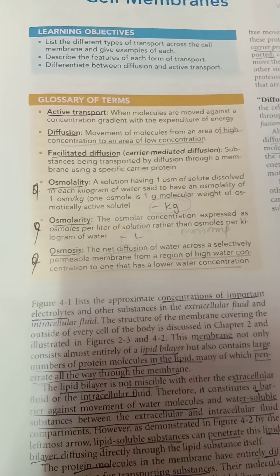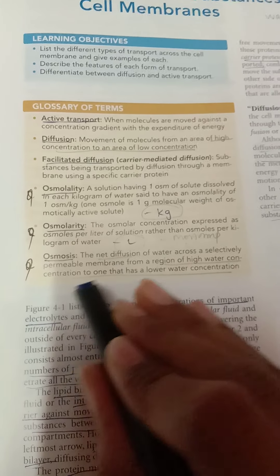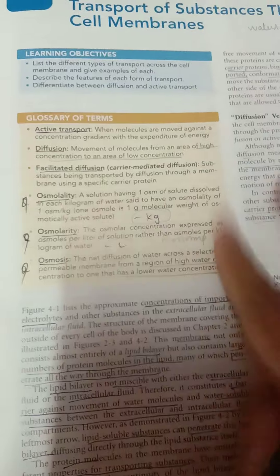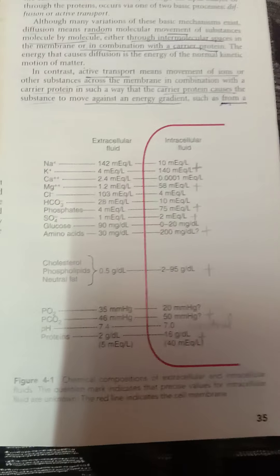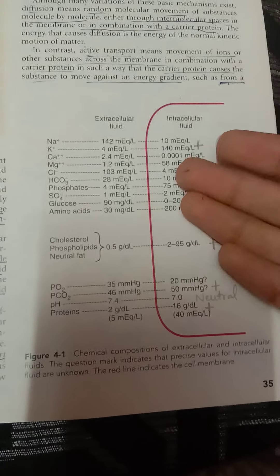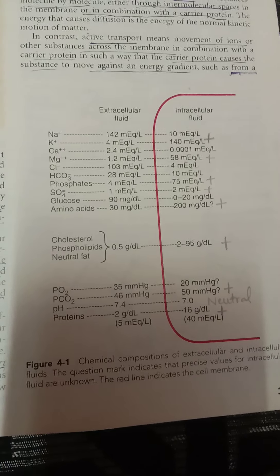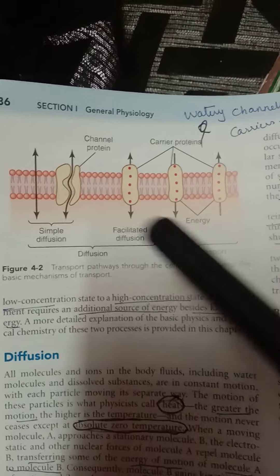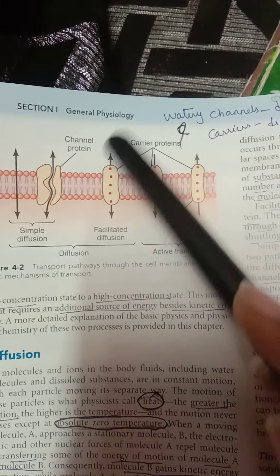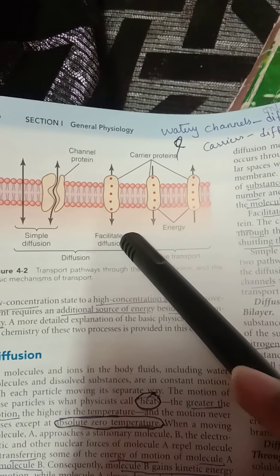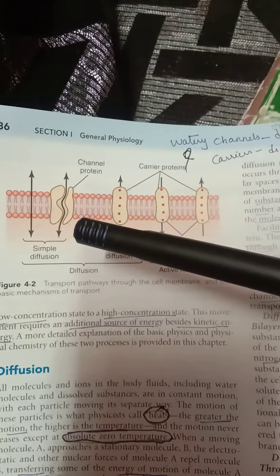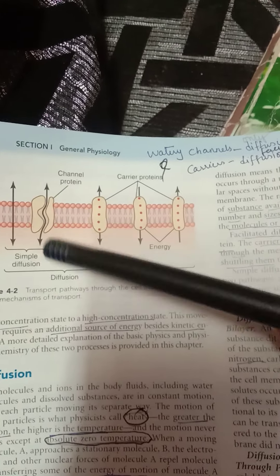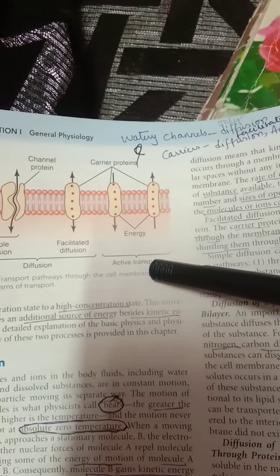Osmosis is the net diffusion of water across a selectively permeable membrane from a region of high water concentration to low water concentration. Channels are involved only in diffusion (e.g., water channels/aquaporins), while carriers are involved in facilitated diffusion and active transport. There are 13 types of aquaporins. Ions and even colloid molecules diffuse similarly to solute molecules, except colloids diffuse far more slowly due to their large size.